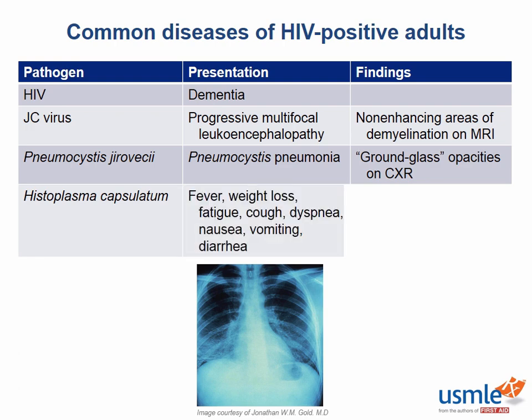Histoplasma capsulatum is a fungus that can cause disseminated fungal infection in the immunocompromised, called histoplasmosis. It is endemic in the Mississippi and Ohio River valleys. This infection leads to several nonspecific symptoms such as fever, fatigue, weight loss, cough, shortness of breath, nausea, vomiting, and diarrhea. If you were to take a biopsy specimen of an area infected with histoplasma, you would see oval yeast cells with macrophages — that is the key finding.